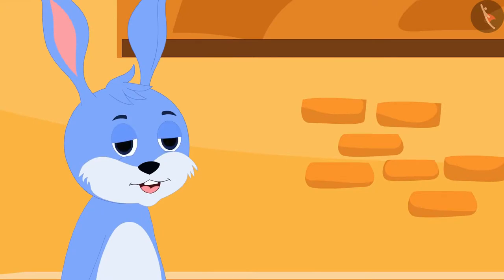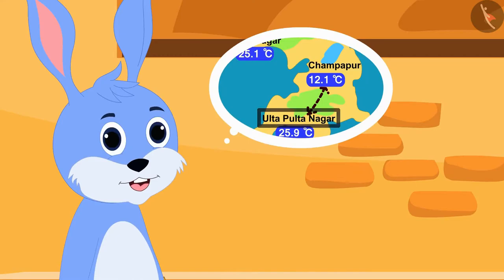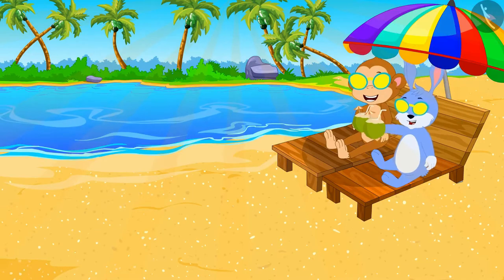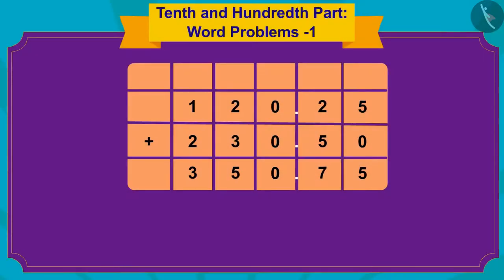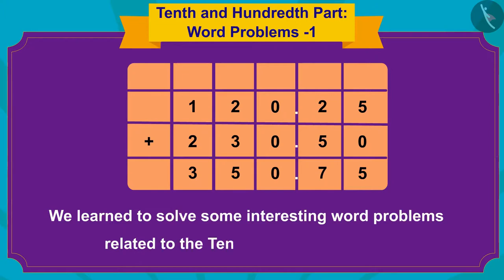He bought two train tickets to go from Champapur to Ulta Pulta Nagar, and together Bunny and Babban reached Ulta Pulta Nagar for their holidays. Children, in this video we learned to solve some interesting word problems related to the tenth and hundredth part. In the next video, we will learn to solve some more interesting problems related to this.